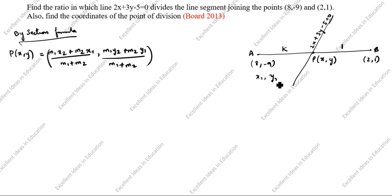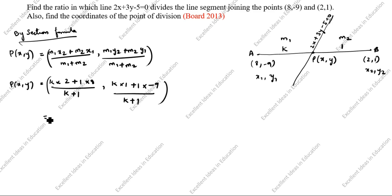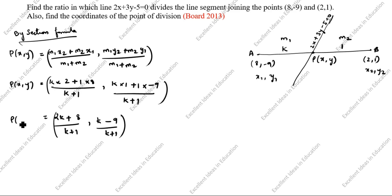Here x1 is 8, y1 is minus 9, x2 is 2, y2 is 1; k is m1 and 1 is m2. So P of x comma y equals k into 2 plus 1 into 8 divided by k plus 1, comma k into 1 plus 1 into minus 9 divided by k plus 1. That gives us 2k plus 8 divided by k plus 1, comma k minus 9 divided by k plus 1.